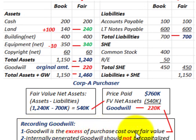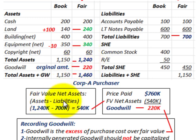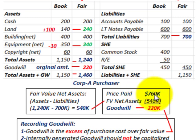Goodwill is the excess of the purchase cost over the fair value of the net assets. So we determine the fair value of net assets: assets at fair value of $1,240,000 less liabilities at fair value of $700,000 gives us $540,000 — that's the fair value of the net assets. The price paid by Corporation A to buy Corporation B was $760,000, so taking the fair value of net assets of $540,000, the difference gives us goodwill of $220,000.